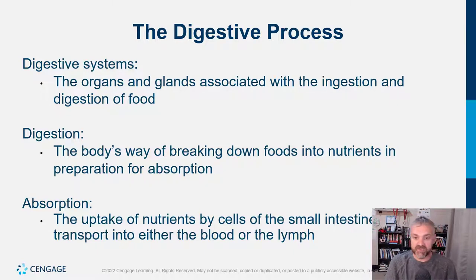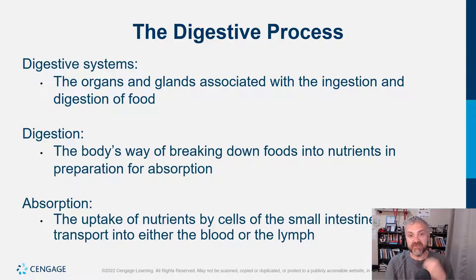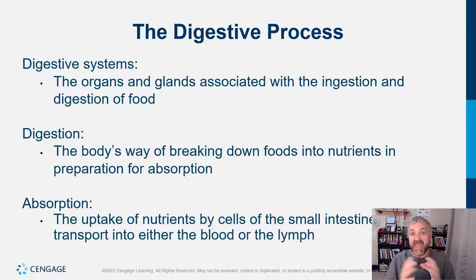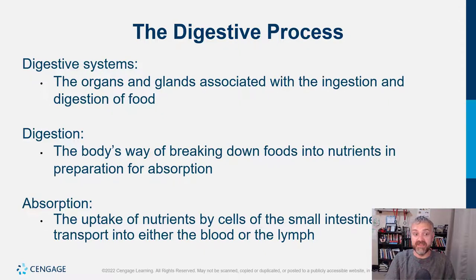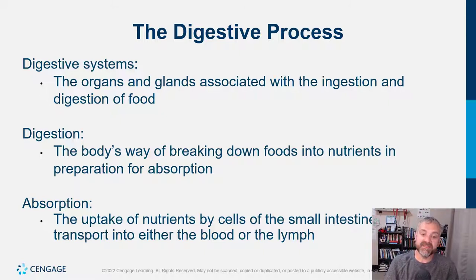What is digestion? You're breaking food down so you can absorb it — both mechanically and chemically. Chewing and churning of food in your stomach is mechanical. Chemical digestion involves the acid in your stomach and your digestive enzymes. Absorption is the uptake of nutrients by cells of the small intestine for transport into either the blood or the lymph, depending on whether they're fat or not.